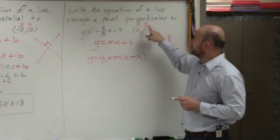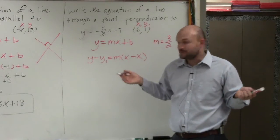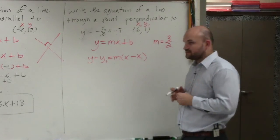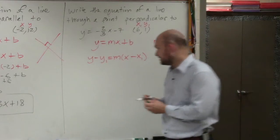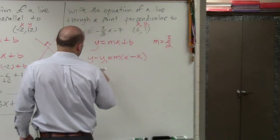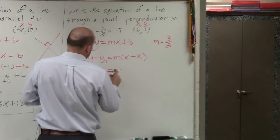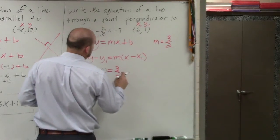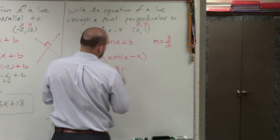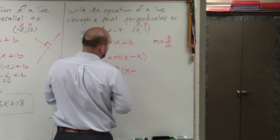So what we're going to do is we're just going to plug the point in for x1 and y1. You could plug them in for x and y if you wanted to, but I'm going to plug them in for x1 and y1 just because then they'll be positive. So when I do that, I obtain y minus 1 equals m, which is 3/2, times (x minus 6).